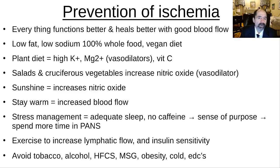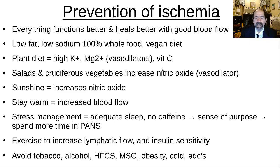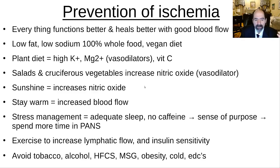Everything functions better with good blood flow. Optimizing blood flow should be a key priority in healing any wound or fracture. Ruth Heidrich, 86 years old, a triathlete — hit by a car in her 70s — healed a fracture super fast because she ate two salads a day and was 100% plant-based. Plant foods have vasodilators like potassium and magnesium. Avoiding sodium — a vasoconstrictor common with processed food — and getting vitamin C from food all help maintain arteries. Salads and cruciferous vegetables increase nitric oxide, a vasodilator. Being in the sun also increases nitric oxide. Staying warm increases blood flow.